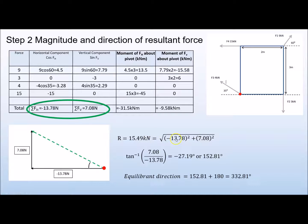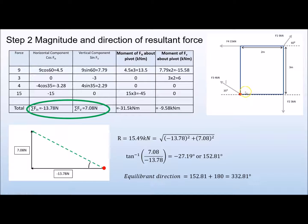Because we have a right-angle triangle, we can use Pythagoras' theorem. The square root of the horizontal squared plus the vertical component squared gives us a resultant of 15.49 kN. Using the inverse tangent of the vertical and horizontal components gives us the angle as −27.19°, so the direction measured from the horizontal line is 152.81°.